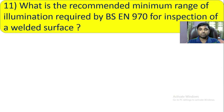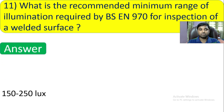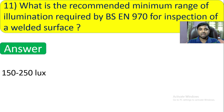Question number 11: What is the recommended minimum range of illumination required by BSEN 970 for inspection of a welded surface? When performing visual welding inspection of a welded surface, the illumination should be 150 to 500 lux. The answer is 150 to 500 lux.